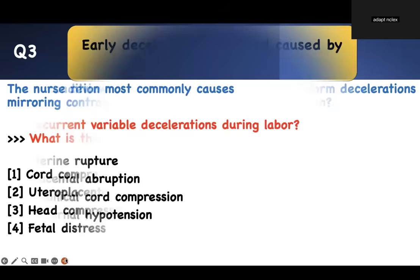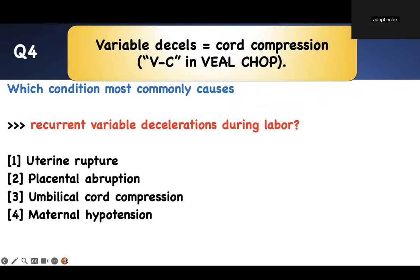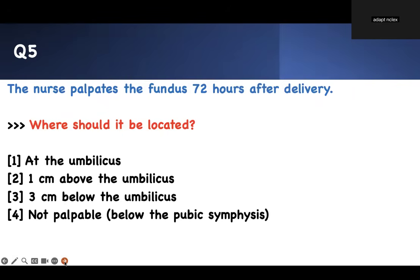Number four. Which condition most commonly causes recurrent variable deceleration during labor? A variable deceleration is equivalent to cord compression. Therefore, the most common cause is cord compression. You should know this — I expect you to know it.